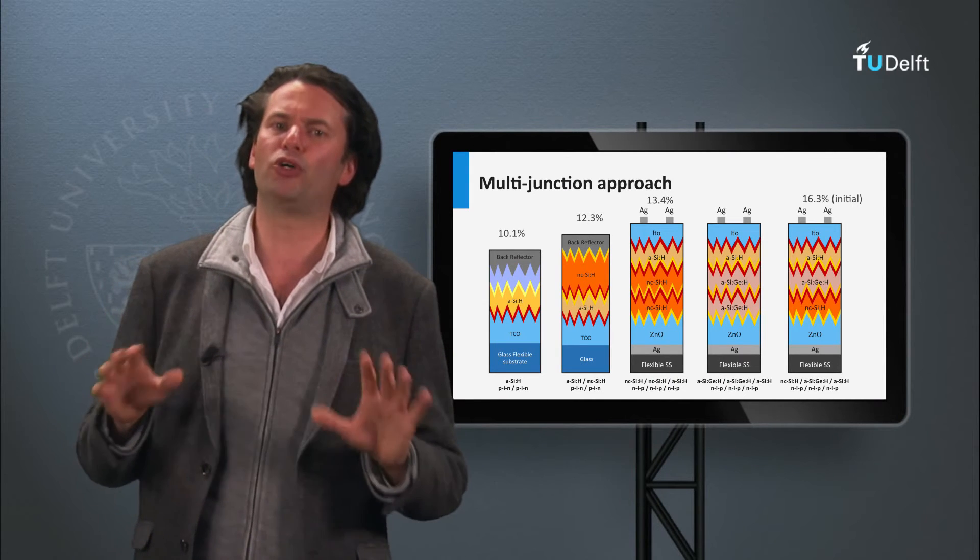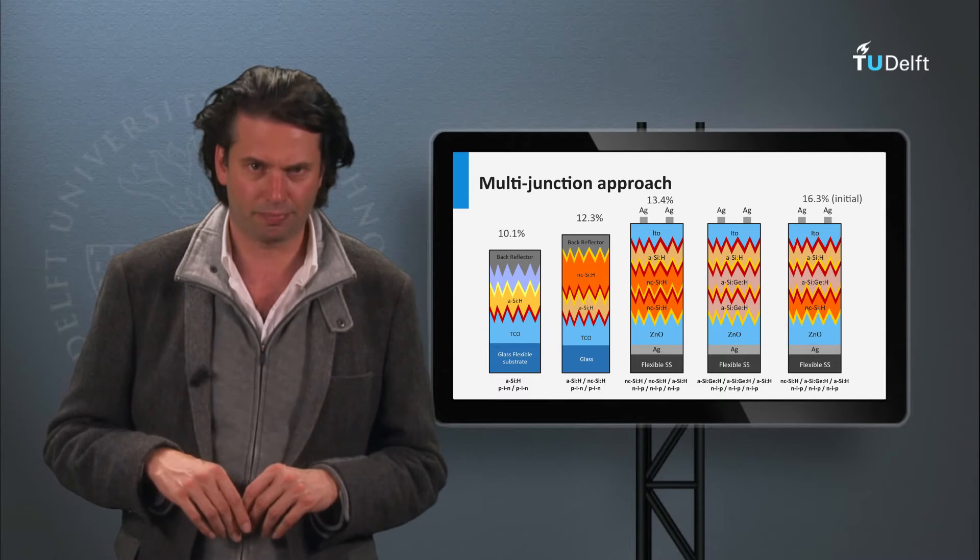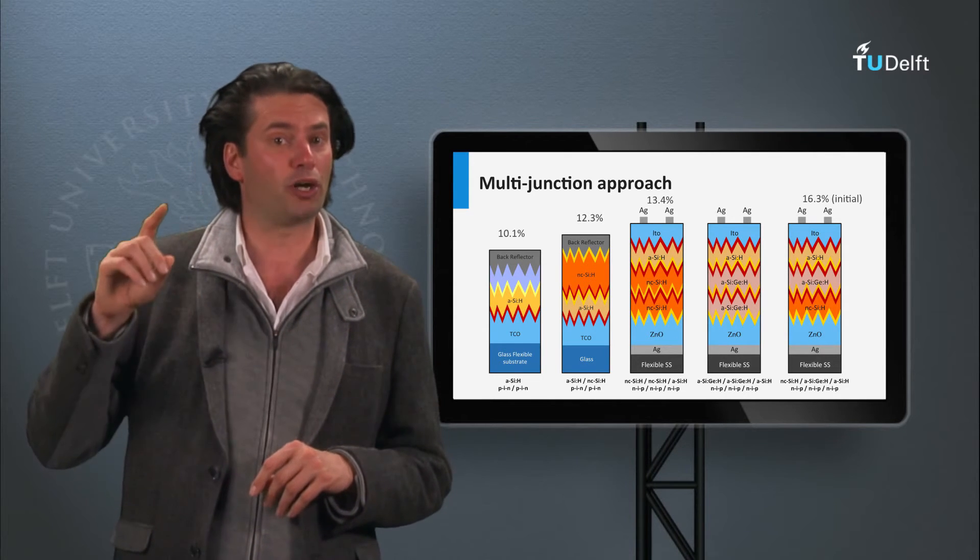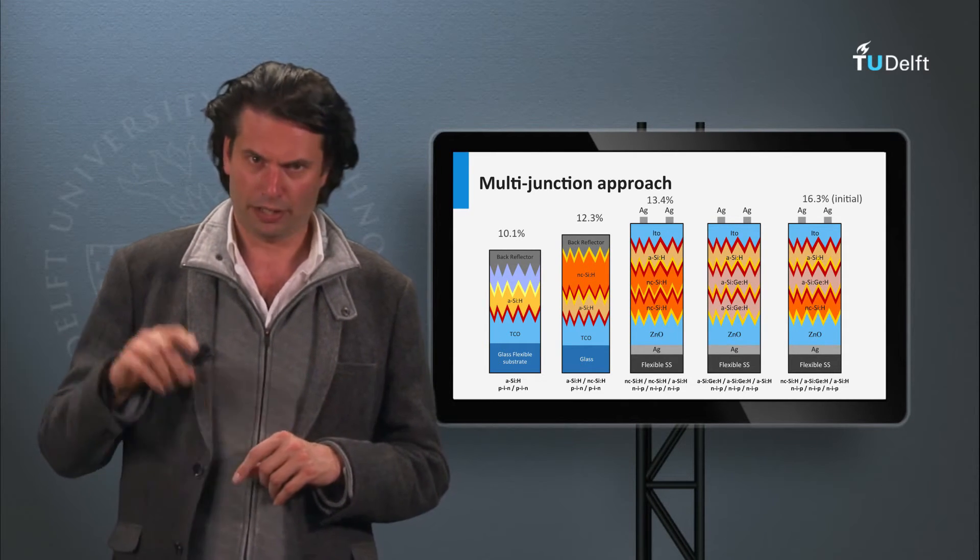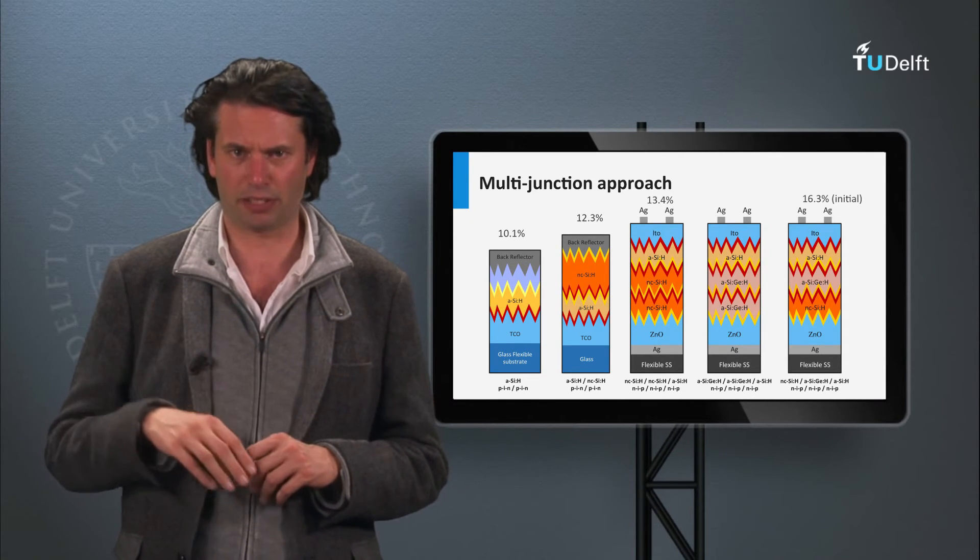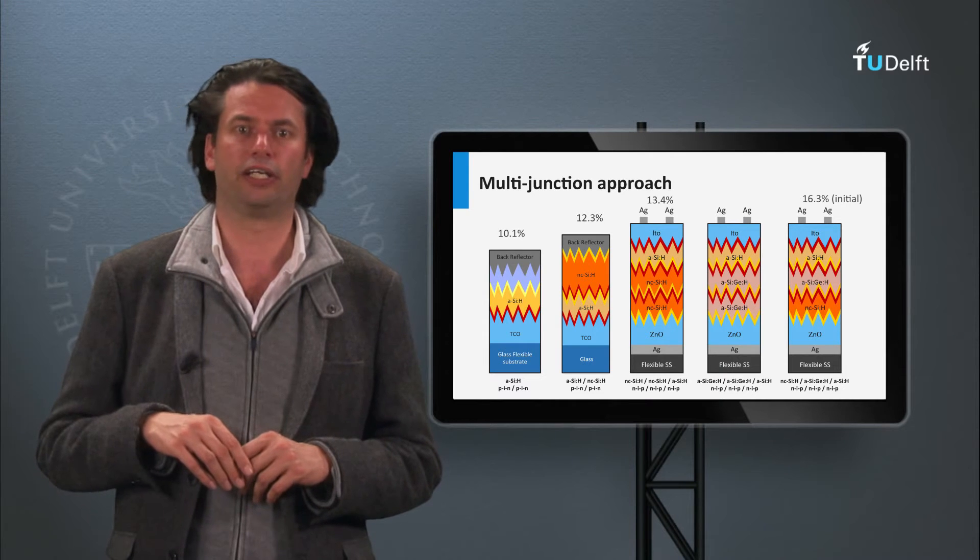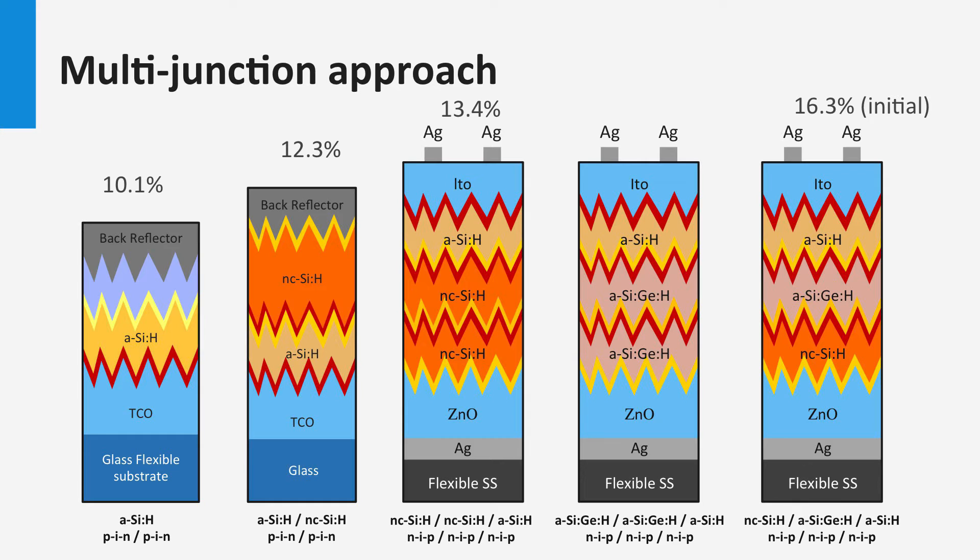In this slide, you see the most studied and developed thin-film silicon concepts on lab scale. The record single junction amorphous silicon solar cell developed by Oerlikon Solar has an efficiency of 10.1%. The best single junction nanocrystalline silicon solar cell is 10.7% as obtained by EPFL in Neuchatel, Switzerland. The best result for a micromorph double junction or an amorphous-nanocrystalline double junction is 12.3% obtained by Oerlikon Solar. LG in Korea has the record for the amorphous-nanocrystalline-nanocrystalline triple junction with 13.4%. United Solar achieved an initial efficiency of 16.3% for the triple junction based on amorphous silicon, amorphous silicon-germanium, and nanocrystalline silicon.